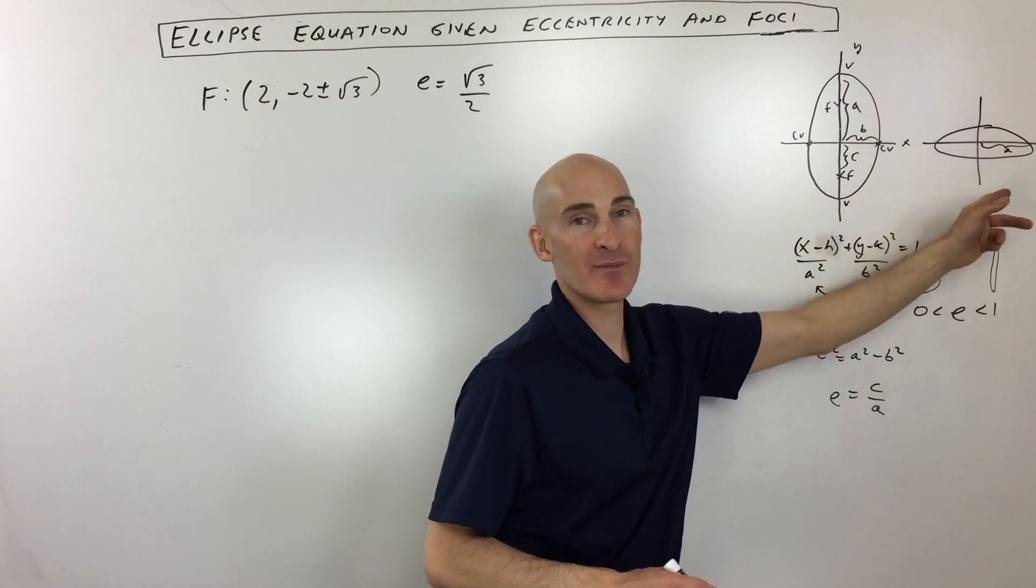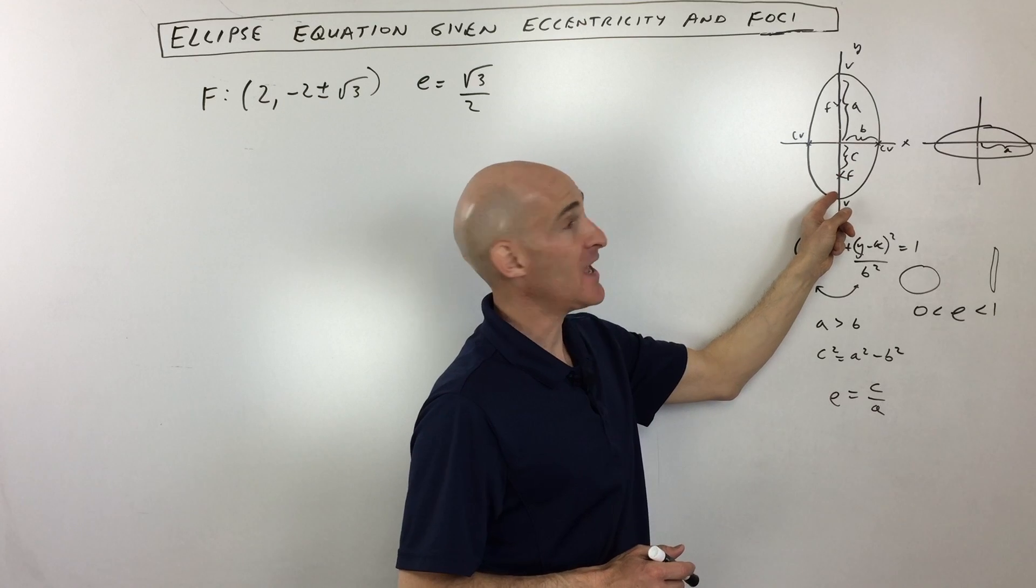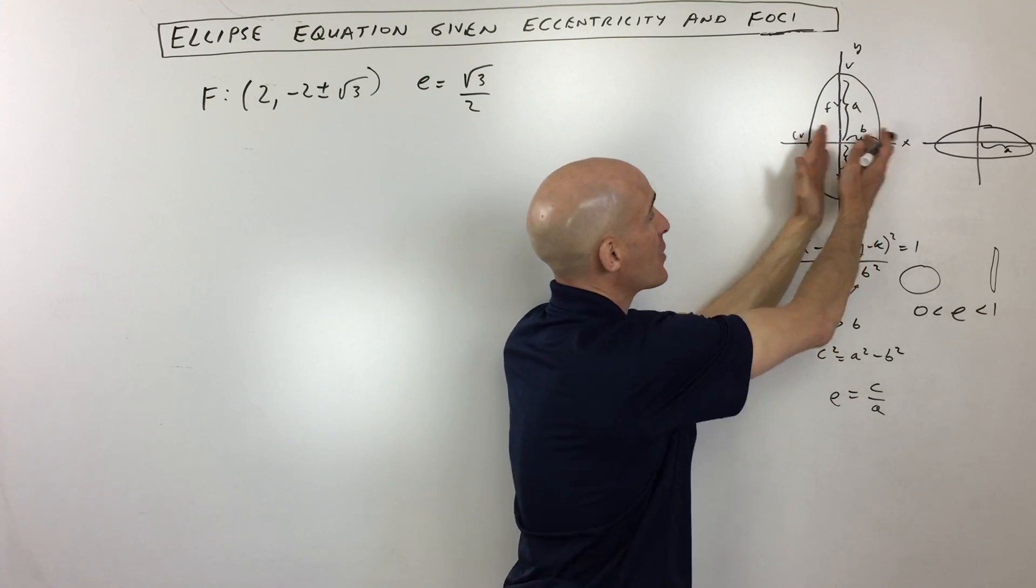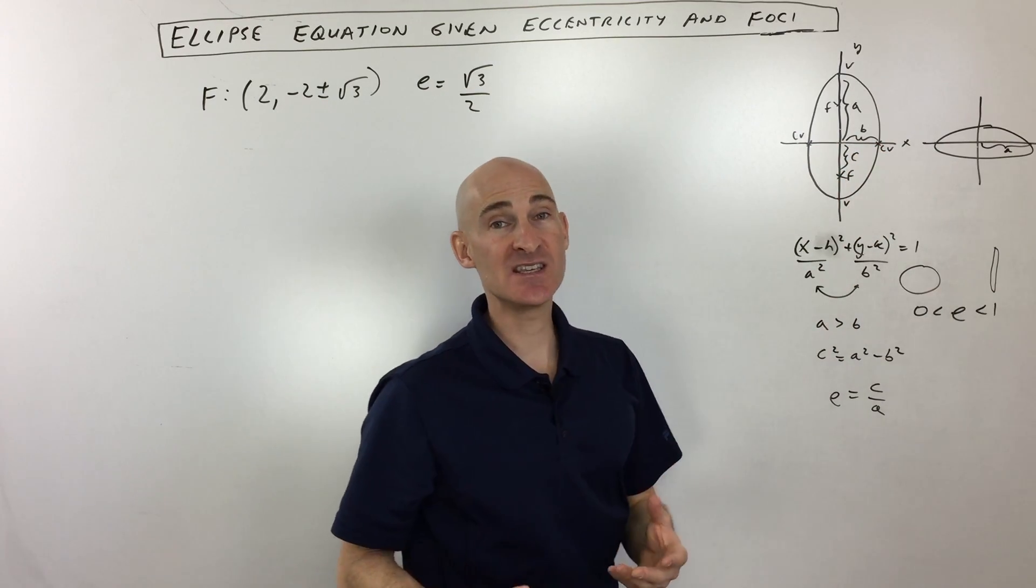We know an ellipse is basically like this oval shape here, and we know the distance from the center to the vertices, we call that distance A. The distance from the center to the co-vertices or the minor vertices in this narrower direction, we call that distance B. And the distance from the center to the foci, we call that distance C.